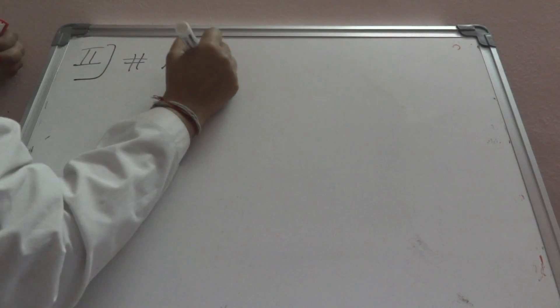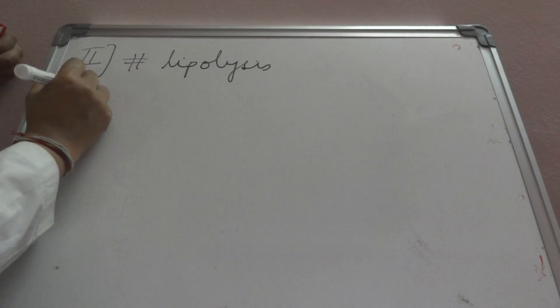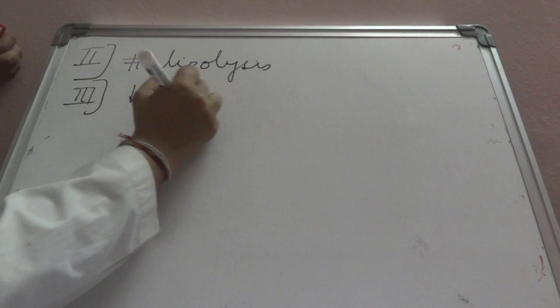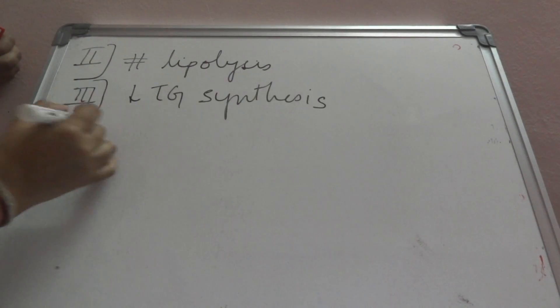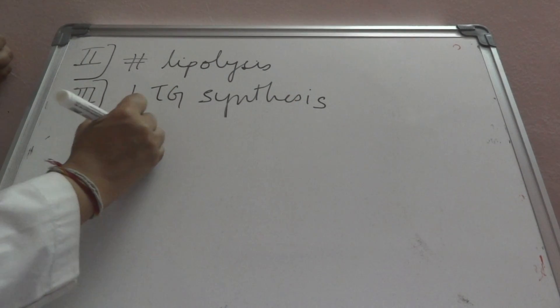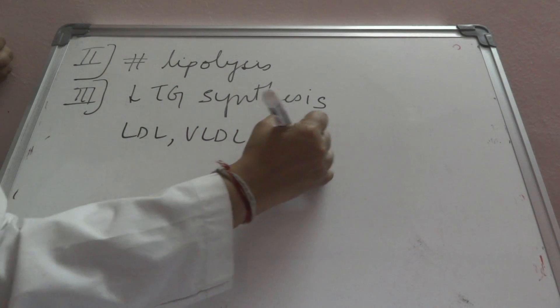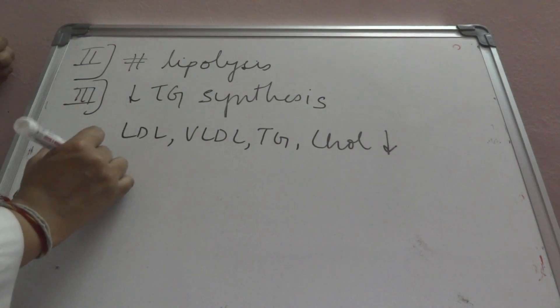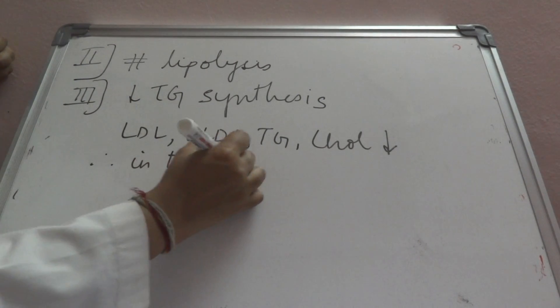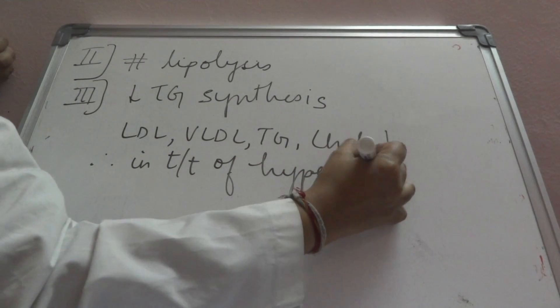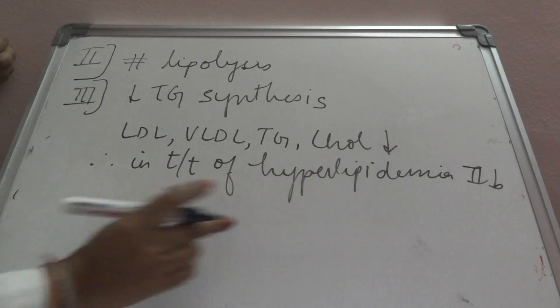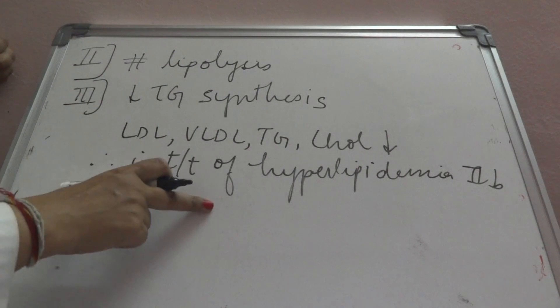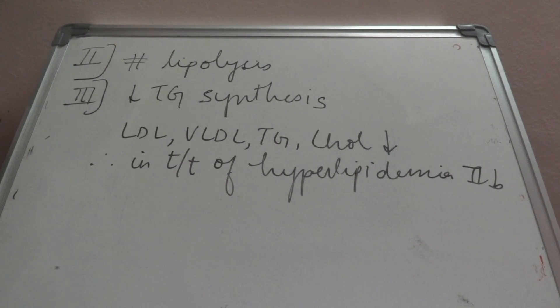The second important function of niacin is that it inhibits lipolysis. The third is that it decreases triglyceride synthesis. Basically it is helpful when the lipid profile is altered, because it causes LDL, VLDL, triglyceride, and cholesterol to decrease. Therefore it is used in the treatment of hyperlipidemia type 2B where LDL and VLDL are increased.